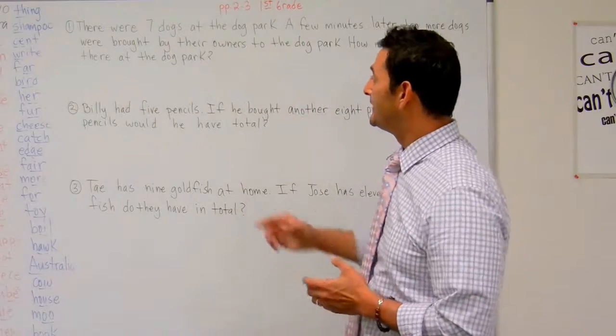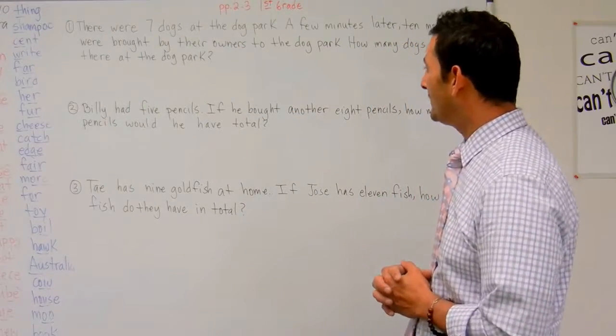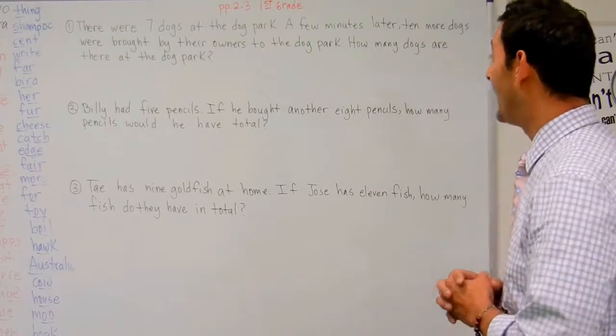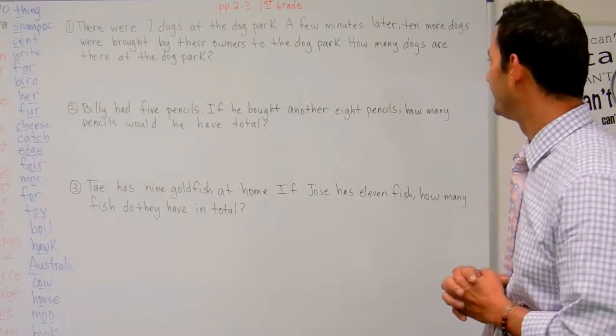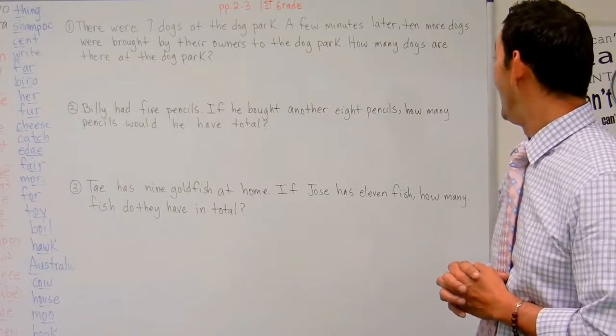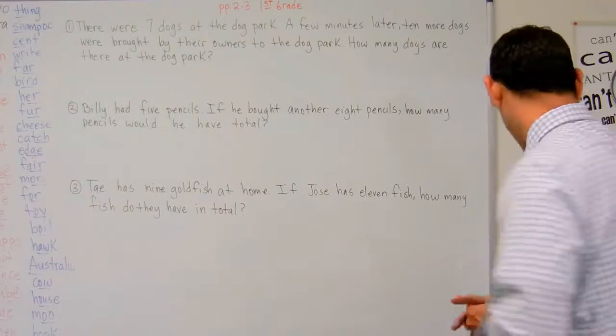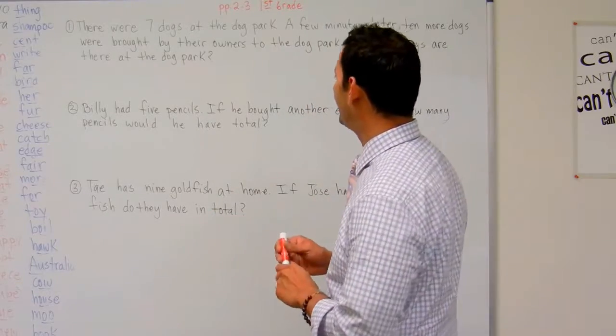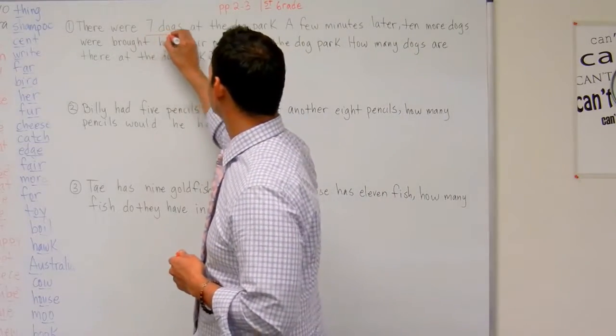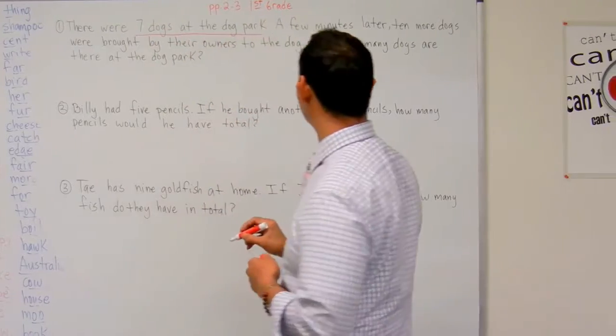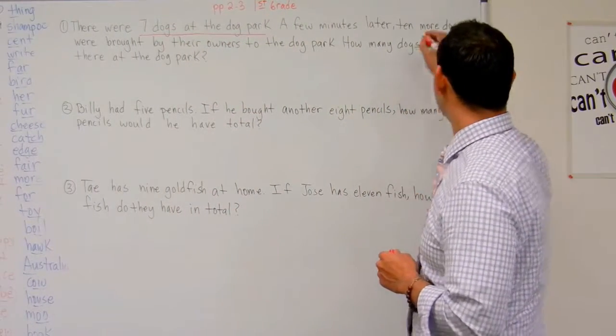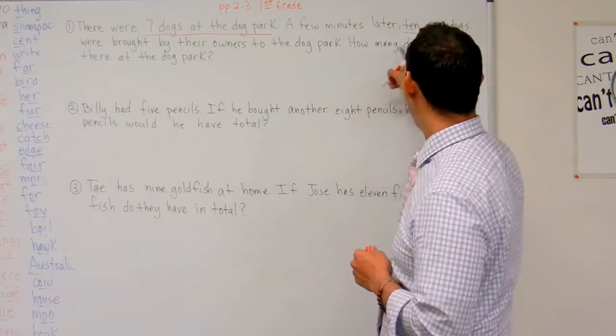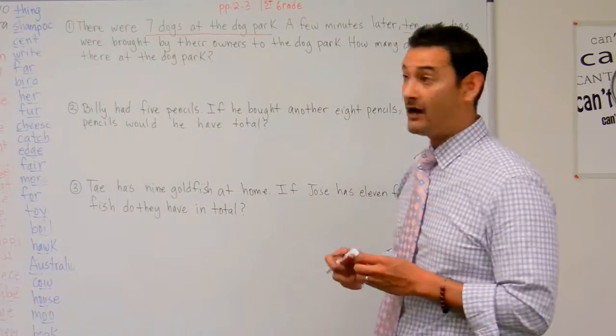So this says, there were 7 dogs at the dog park. A few minutes later, 10 more dogs were brought by their owners to the dog park. How many dogs are there at the dog park? Let's take a look at this. Let's go ahead and read this step by step. There were 7 dogs at the dog park. A few minutes later, 10 more dogs were brought by their owners to the dog park. How many dogs are there at the dog park?